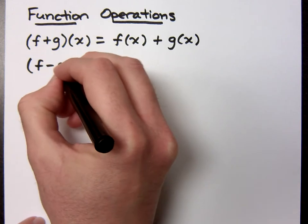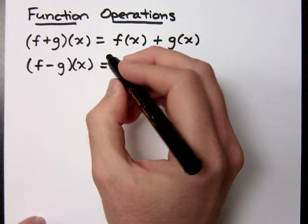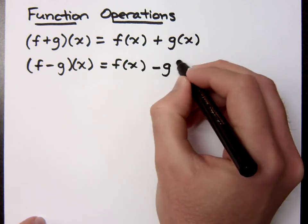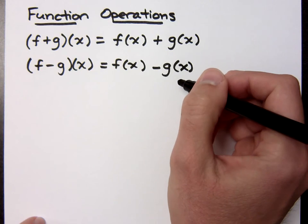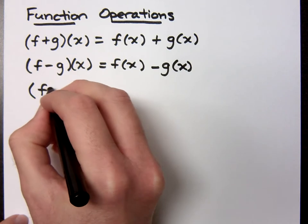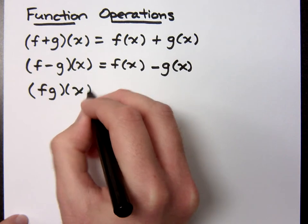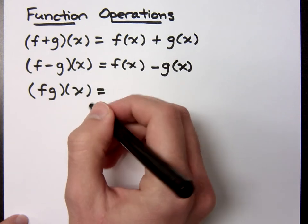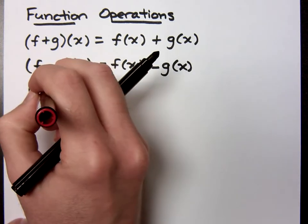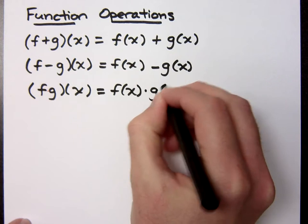If this were F minus G of X, what do you think it would become? F of X minus G of X. And if I had this of X, what do you think that means? These guys are right next to each other — that's multiplication, so that means F of X times G of X.